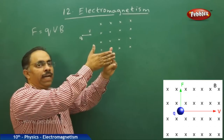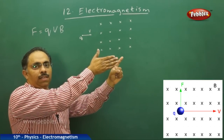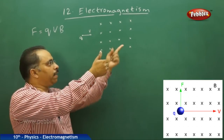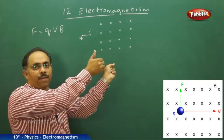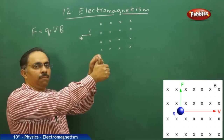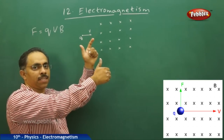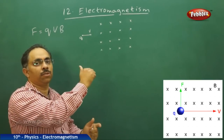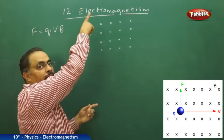I am pointing my right-hand fingers in the direction of velocity and curling those fingers in the direction of the magnetic field — into the board this way. When I face this way, the thumb is stretched in the upward direction. This thumb is indicating the direction of the force, meaning the force is in the vertically upward direction.